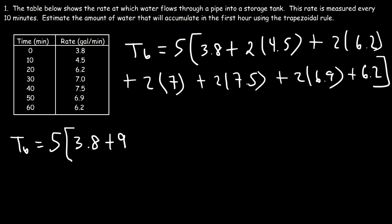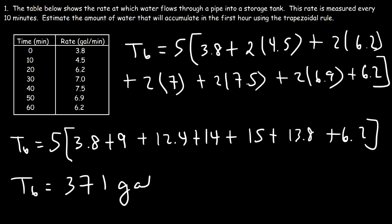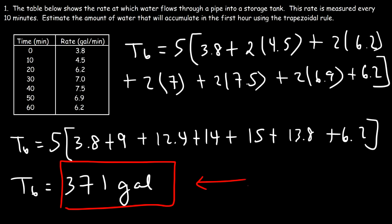Computing: 2×4.5=9, 2×6.2=12.4, 2×7=14, 2×7.5=15, 2×6.9=13.8, plus 6.2. Multiplying by 5 (since 10/2=5) gives a total of 371 gallons. That is the estimated amount of water that will accumulate in the tank over the first hour based on the trapezoidal rule. This is just an estimate — the exact answer might differ slightly, but it will be close.